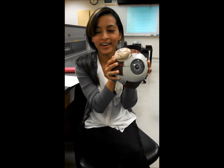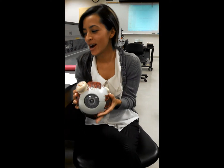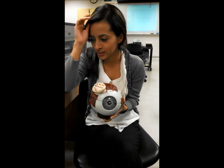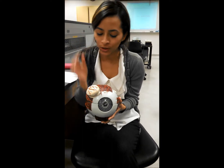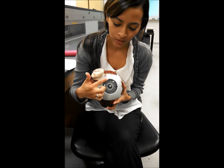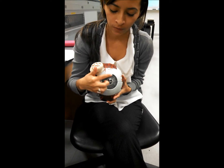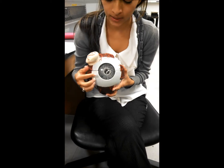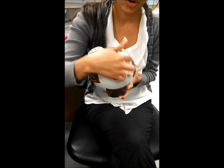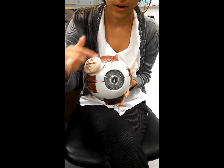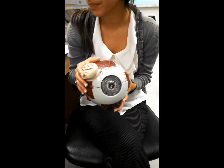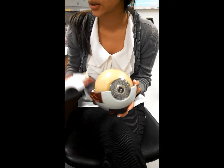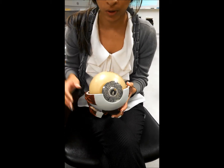This is the eye. We're going to be looking at the fibrous tunic first, which consists of the cornea, which is a translucent covering over the front part of the eye, and the sclera, which is the white part of the eye.